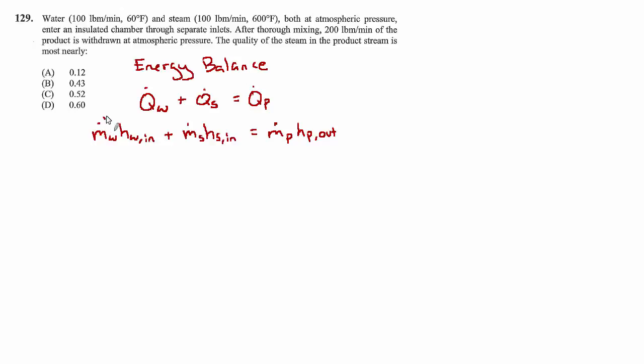We know the mass flow rates and we're looking for the enthalpy of the product stream. Now we have to do a bit of work to specify the enthalpy of the water and the enthalpy of the steam at the inlets.